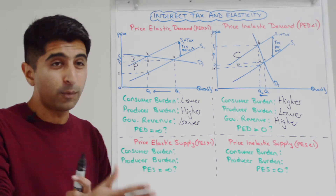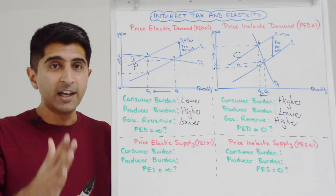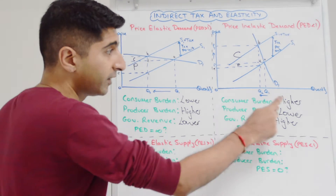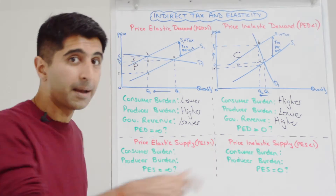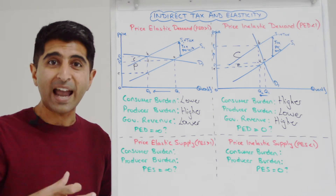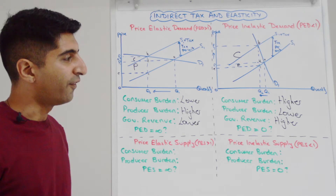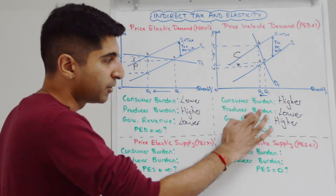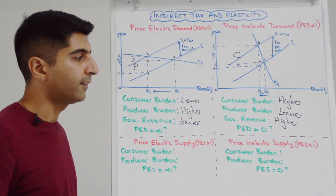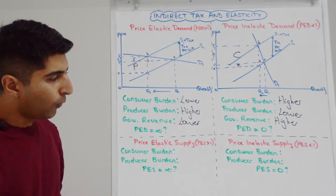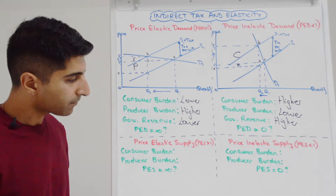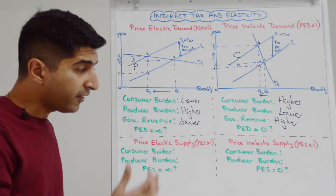What about if demand is perfectly price inelastic — PED zero, with a vertical demand curve? Going to the extreme: consumers take the entire burden, the difference in price equals the exact value of the indirect tax, the producer burden is nothing, and government revenue is at its highest in that situation.